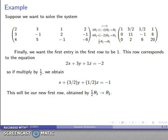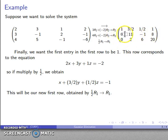We're getting towards row echelon form. The first non-zero entry in the first row is 1 and everything below it is 0. Now moving to the next row: the first non-zero entry isn't 1, and more importantly the entries below it aren't 0, so we need to apply a further reduction to this matrix.